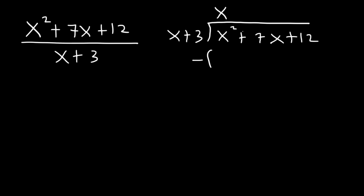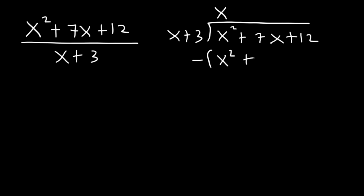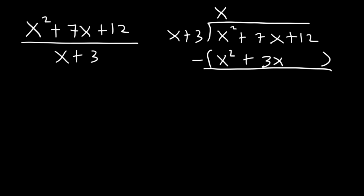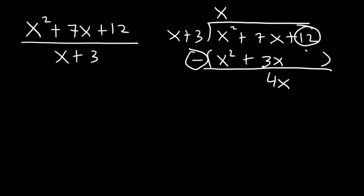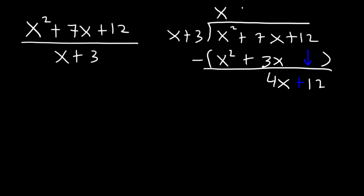Next, multiply: x times x is x squared, and x times 3 is 3x. Then subtract: x squared minus x squared is 0 — they cancel. 7x minus 3x is 4x. Bring down the 12, giving us 4x plus 12.